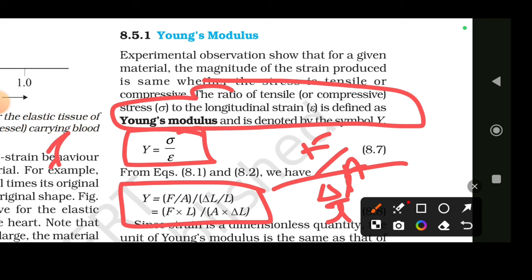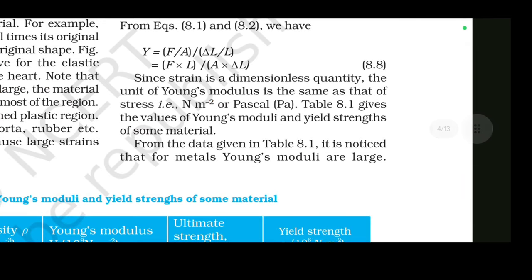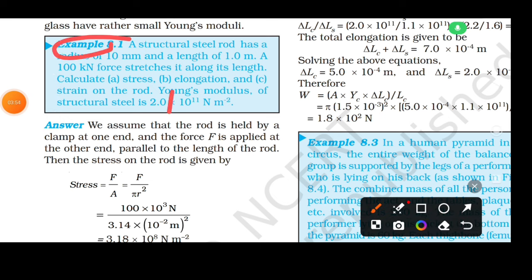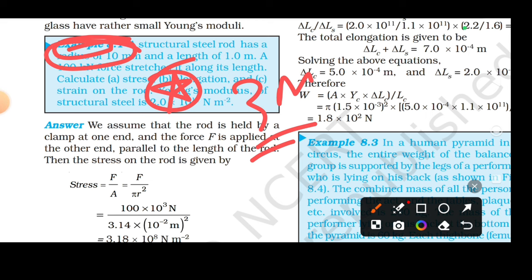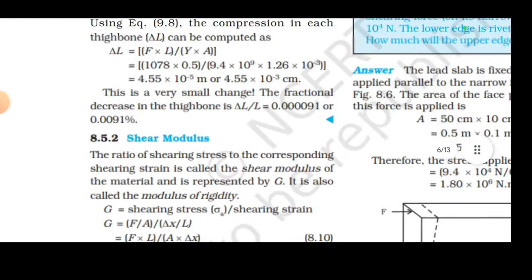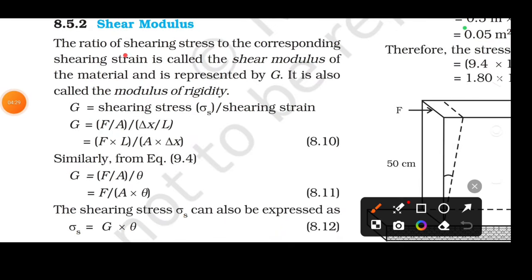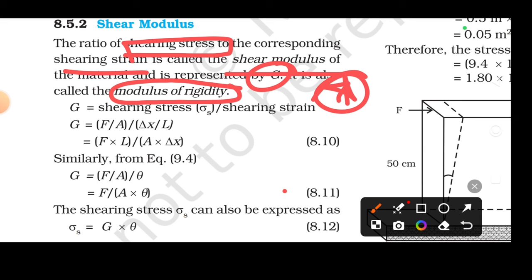This is the first problem in this chapter — note it carefully. Next problem: a copper wire of a given length — find the load applied. Then, shear modulus: the ratio of shearing stress to the corresponding shearing strain is known as shear modulus. It is represented by G and is also called the modulus of rigidity — very important for MCQs. The equation is G = (F/A) divided by theta.